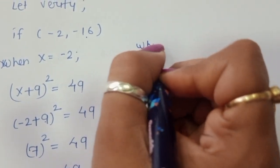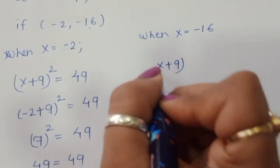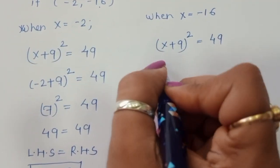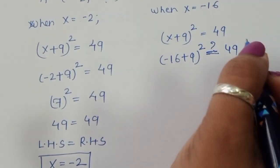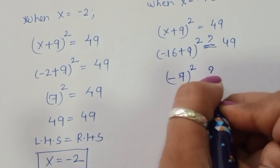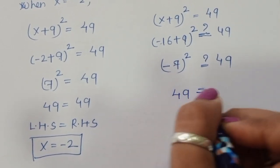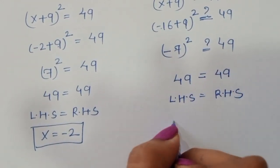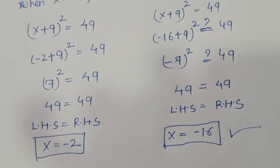When x = -16, substituting gives (-16 + 9) whole square = (-7)² = 49. Since 49 = 49, LHS equals RHS. So x = -16 is also a correct solution. Thank you.